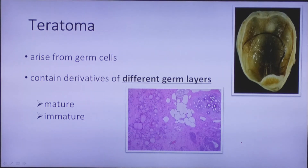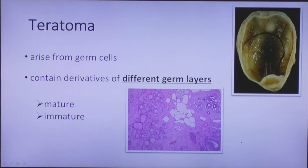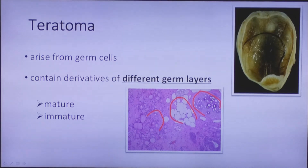Tumors that arise from germ cells and contain derivatives of different germ layers are labeled teratomas. These tumors occur principally in the gonads and occasionally in the mediastinum, and may contain a variety of structures such as skin, neurons, glial cells, intestinal epithelium, and cartilage. Here we can see cartilage, fat, and some elements of epithelium. Concerning teratomas, we do not use the terms benign or malignant — the more correct terminology is mature or immature. If it consists only of mature elements, it is a mature teratoma; if it has immature elements, it is an immature teratoma, and this variant is more dangerous.